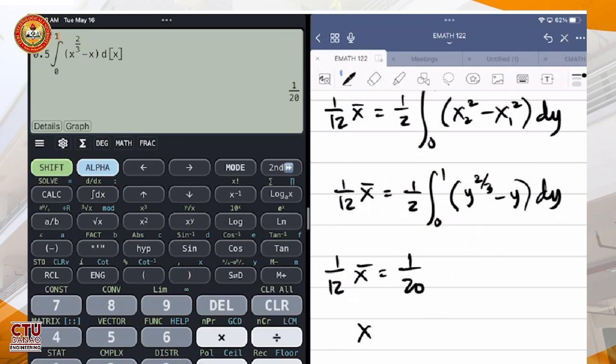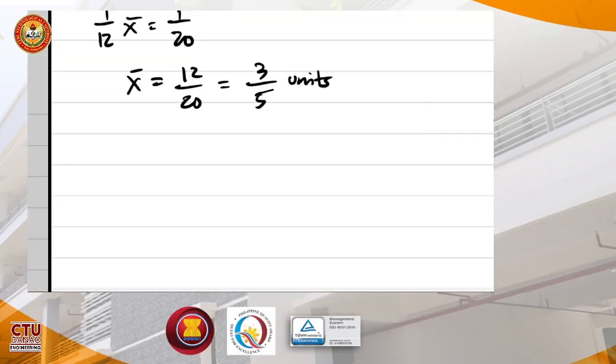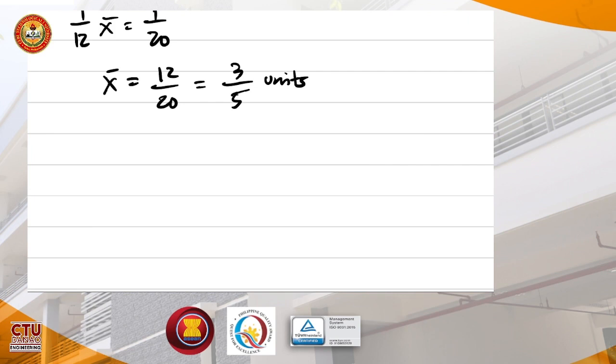1 over 20 x bar is equal to 12 over 20 or 3 fifths units. Okay. So since we're done, assignment na lang ang y bar. Continue na lang ninyo for y bar.